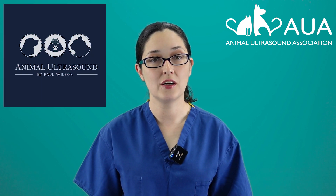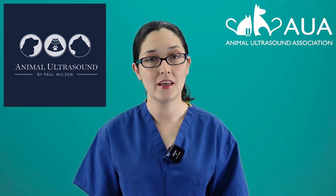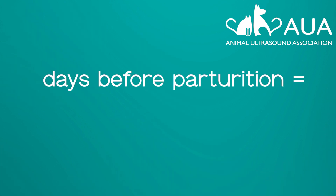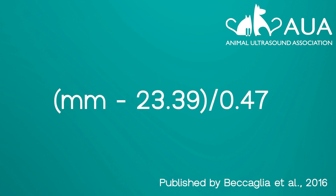For cats, there are several published calculations. Paul Wilson of Animal Ultrasound in Doncaster and I have been working together on this, and we have found that the best formula for biparietal diameter in cats is: the head diameter measurement in millimetres, minus 23.39, divided by 0.47.